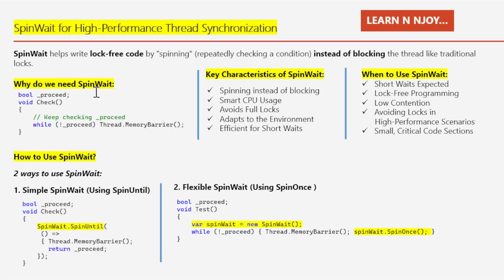Now the question arises: why do we need SpinWait? When multiple threads are working together, sometimes one thread needs to wait for another to complete a task. One way to wait is using a simple boolean flag that the waiting thread keeps checking. Here we have a boolean variable `_proceed` set to false. In the check method, we check if it's true, then `Thread.MemoryBarrier` gets executed; the while loop keeps checking `_proceed` until it becomes true.